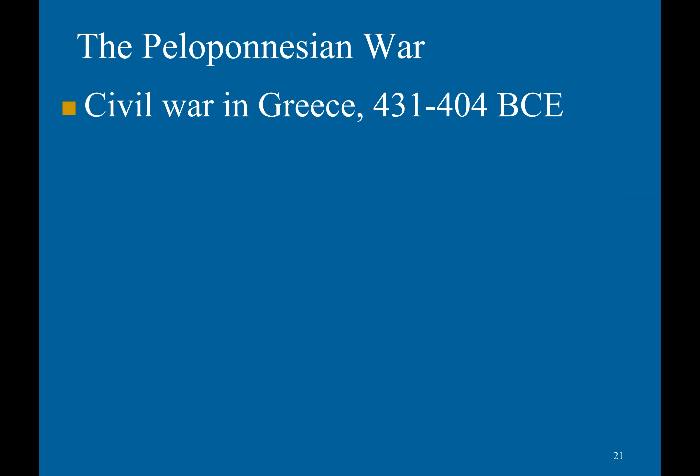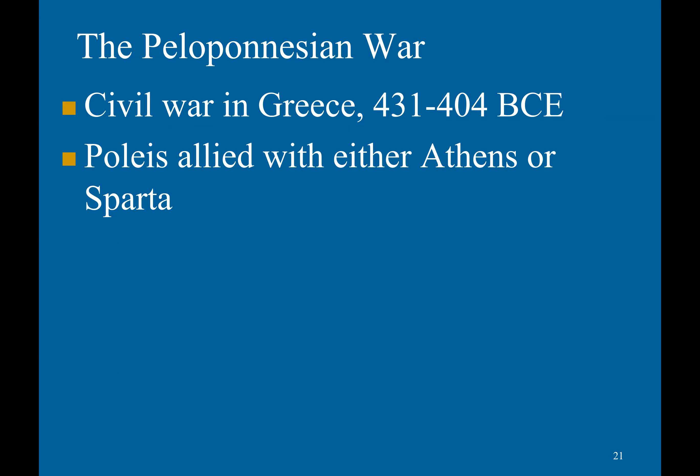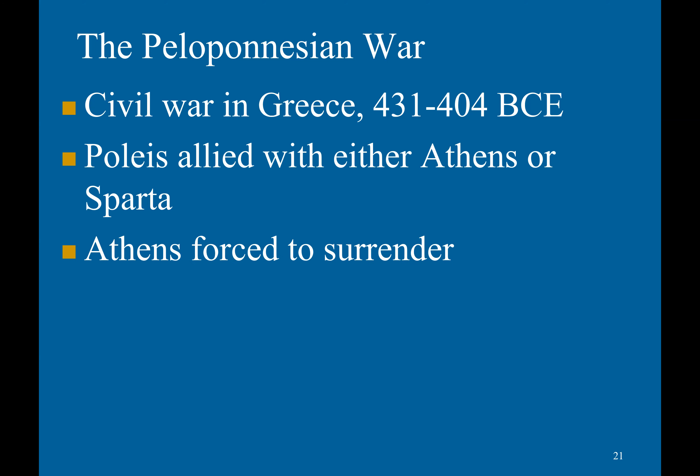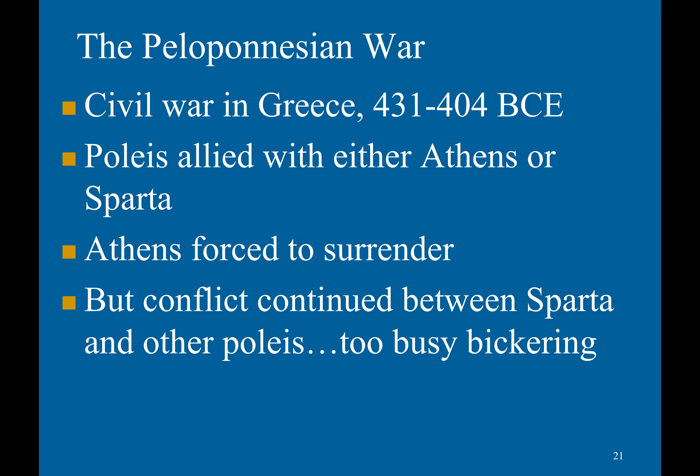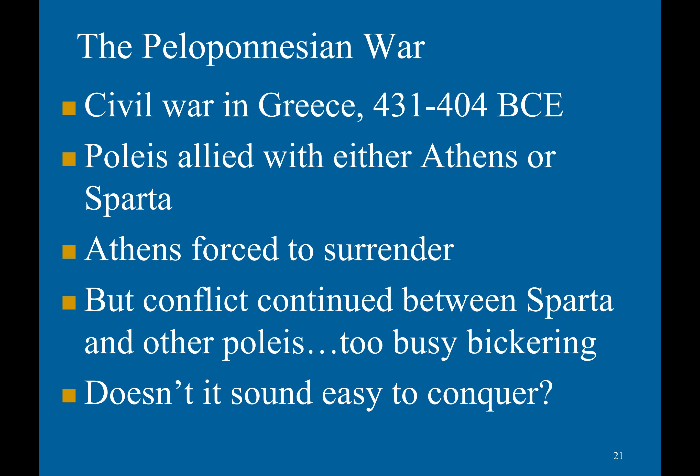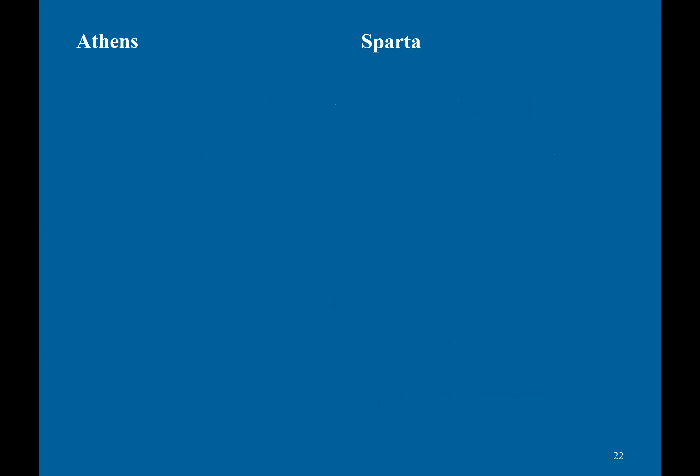The Peloponnesian War, a civil war, brought chaos to Greece from 431 to 404 BCE. The poleis were allied with either Athens or Sparta. Athens was forced to surrender, but conflict continued between Sparta and other poleis. These cities were so busy bickering that they couldn't worry about foreign invasions — making them easy targets for an outside conqueror.